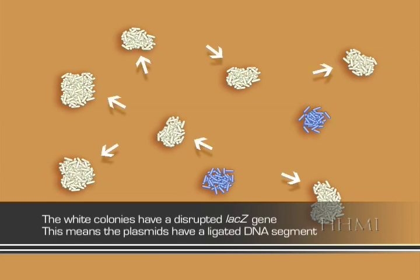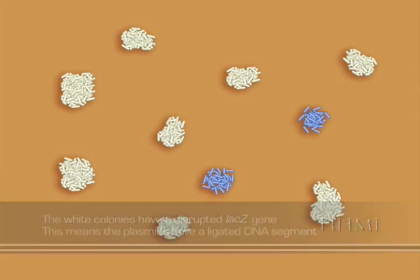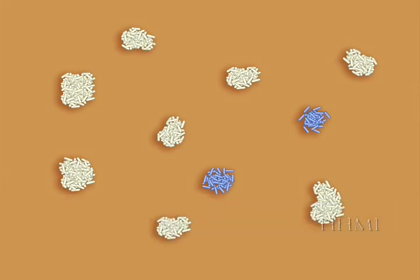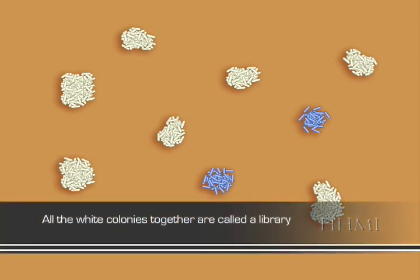Finally, we have these white colonies. These colonies received a plasmid, and that plasmid had a fragment of the genomic DNA inserted in the LACZ gene, which disrupts its function. All of these white colonies together more or less contain the sum of the original long 150 to 200 kilobase source strand of DNA we started with. All these plates that contain the same genome are together called a library.